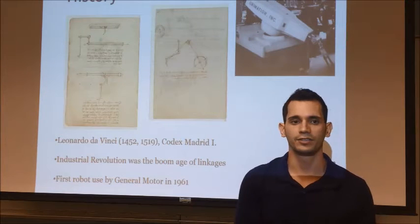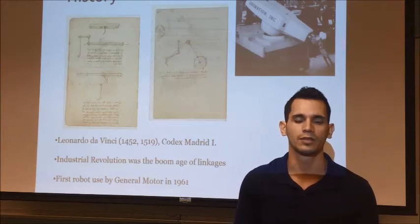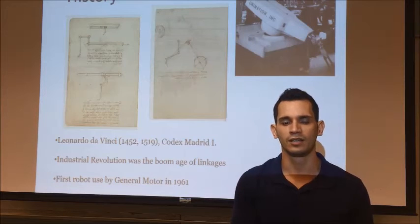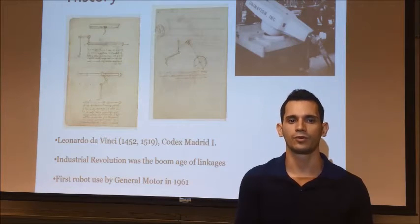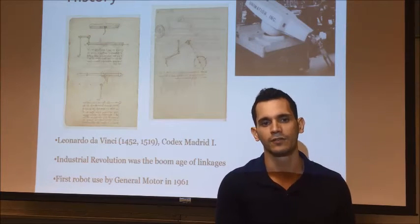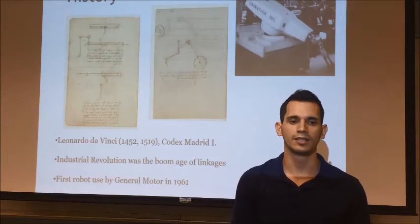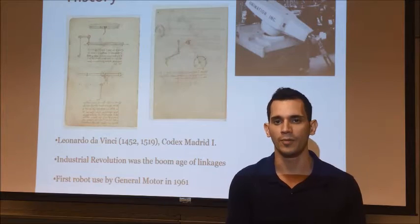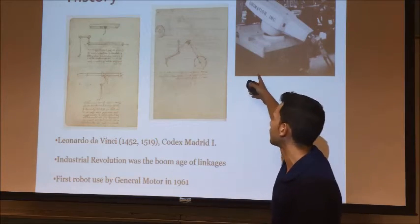A little bit of history about linkage. The first known mathematical work was done by Leonardo da Vinci during the 1400s. During the 20th century, factories were in demand for robots for assembly lines. In 1961, the first robot was used by the GM Motor Company, and as you can see, this is the robot that was first used.